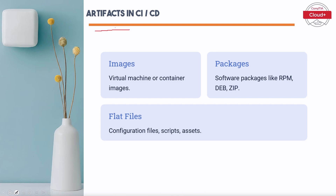Artifacts are the output of the build process and are essential for deployment and distribution. The different types are: Images — virtual machine or container images that encapsulate the application and its dependencies. Packages — software packages like RPM, DEB, and zip, containing the compiled application and resources ready for installation. Flat Files — configuration files, scripts, and assets that provide necessary configurations and other resources required by the application.